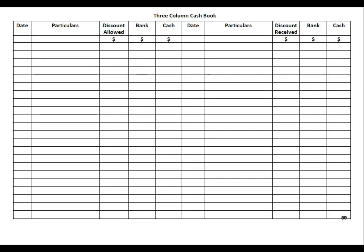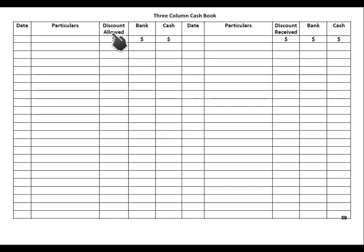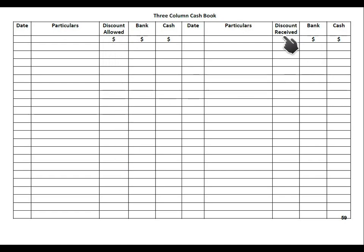There are two variants of a cash book: the two-column cash book and the three-column cash book. In a two-column cash book there are two columns — one for bank and one for cash — on the debit side (left) and credit side (right). In a three-column cash book there is an additional column: one for discount allowed and one for discount received, plus bank and cash.